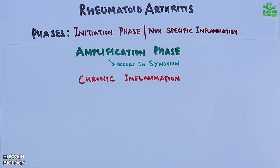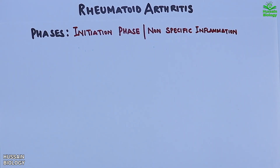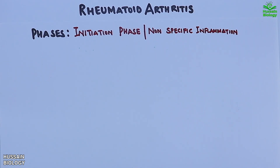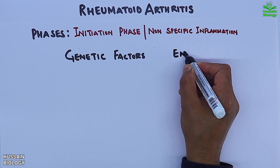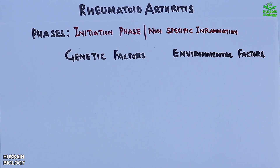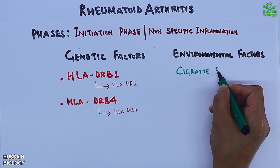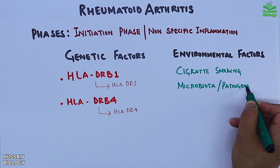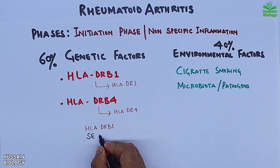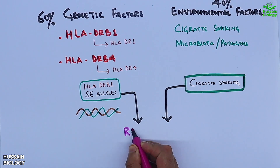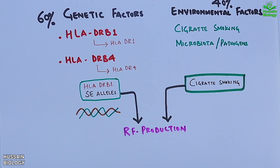The initiation phase starts with two primary risk factors: genetic factors and environmental factors. The genetic factors include HLA-DRB1 and HLA-DRB4, while environmental factors include cigarette smoking and pathogens. Both HLA-DRB1 and cigarette smoking can independently lead to rheumatoid factor (RF) production, which can target and destroy healthy cells.